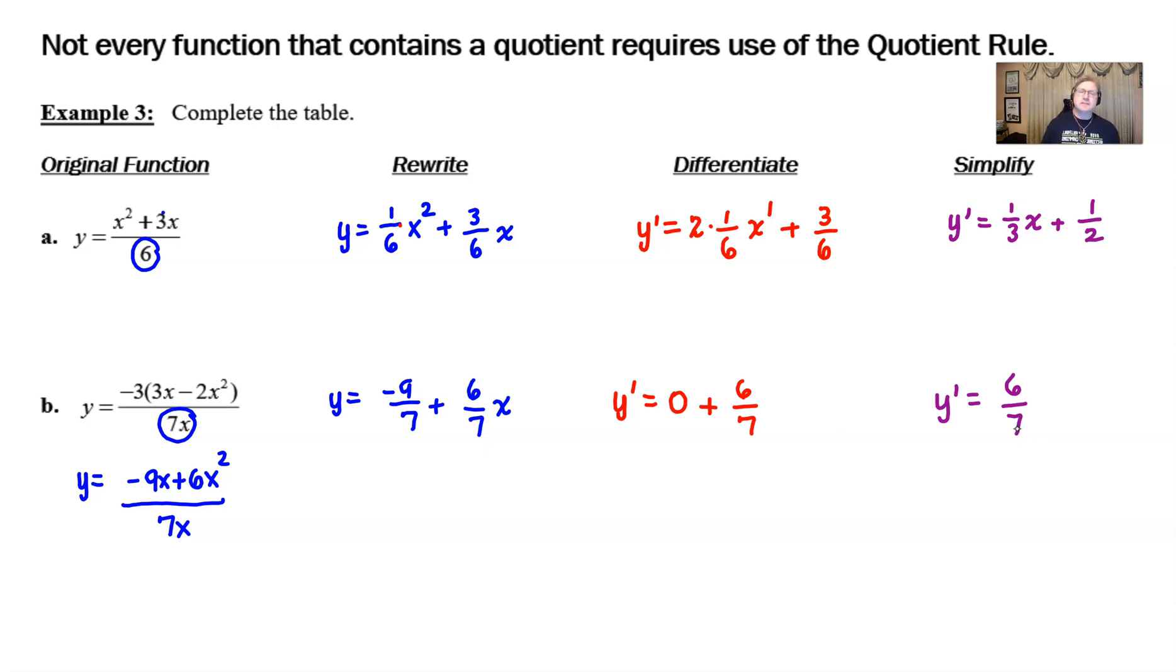I also tell my students, how is it that you know that you can avoid the quotient rule? I always say, if you can count to one. And we're talking about one as in one term in the bottom. Always avoid the quotient rule in those situations. Anyway, I hope this helps out. We'll see you at the next video.